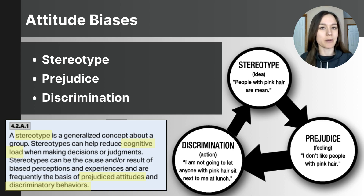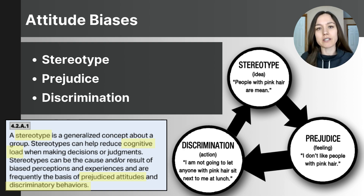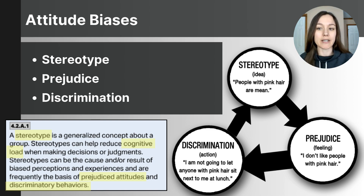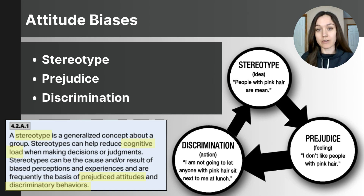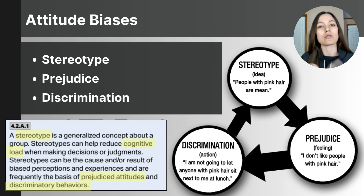Prejudice means to make a pre-judgment — a judgment before you know or encounter the thing you're judging. Prejudice refers to a negative attitude toward a group of people, usually in reference to a group with a specific characteristic like gender, race, ethnicity, age, or sexual orientation. Discrimination is the behavior that results from our prejudice — an unjustified negative action toward a specific group of people.